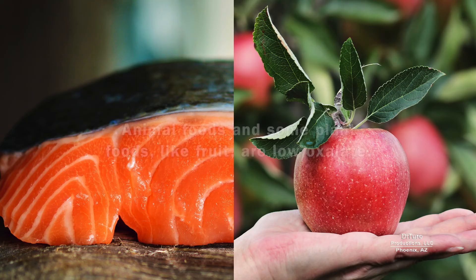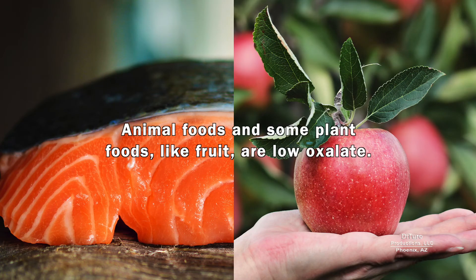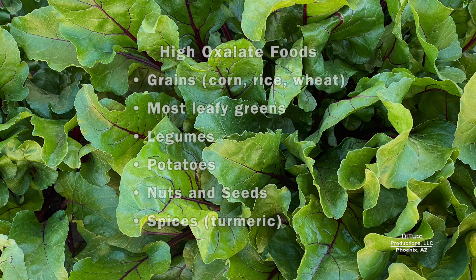Which foods are low and high in oxalate? Animal foods and some plant foods like fruit are low oxalate. High oxalate foods include grains, most leafy greens, legumes, potatoes, nuts and seeds, and even the miracle spice turmeric.